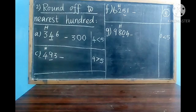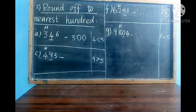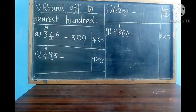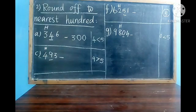In 100 there are 2 zeros, so in the ones place and tens place we write 0, and the hundreds place remains 3 as it is. The answer for A is 300.